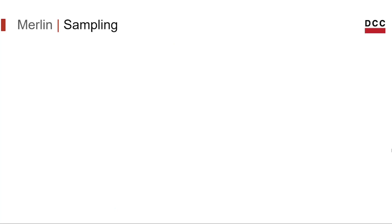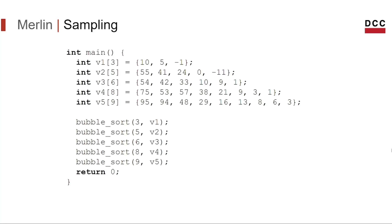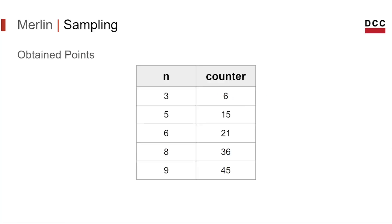After that, we need to generate different points to be used as samples for the interpolation. We need a lot of these tuples to use as samples. To do that, we create five vectors — all sorted in ascending order to capture the worst case of the bubble sort algorithm. We run the bubble sort on these five vectors and after running these inputs, we got five tuples. The first column represents the vector length and the second column represents the value of the counter — the number of iterations used to sort each vector.